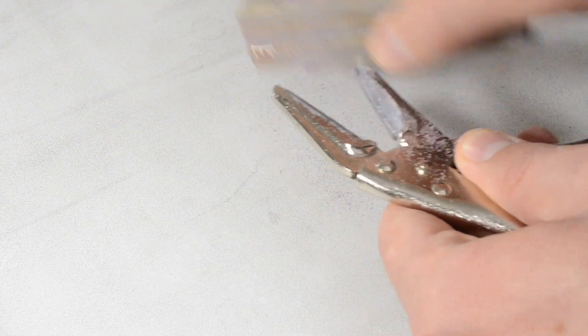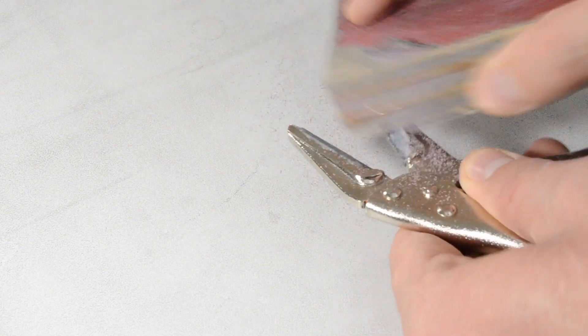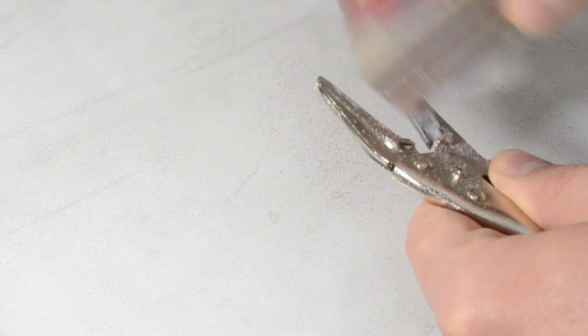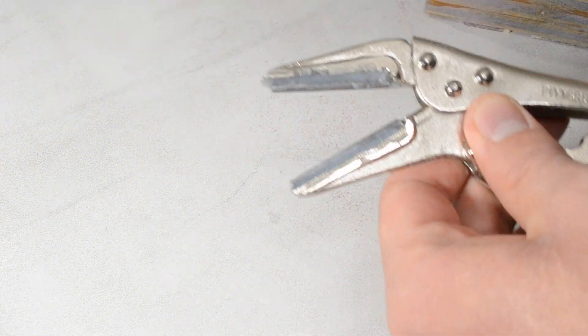In addition to that, I'm just going to take a sanding block, and I'm going to clean up any excess burrs, any sharp spots on there. I want to make sure that there's nothing that's going to puncture the hose. Once I'm done with that and the jaws are all smooth, we're ready to go.